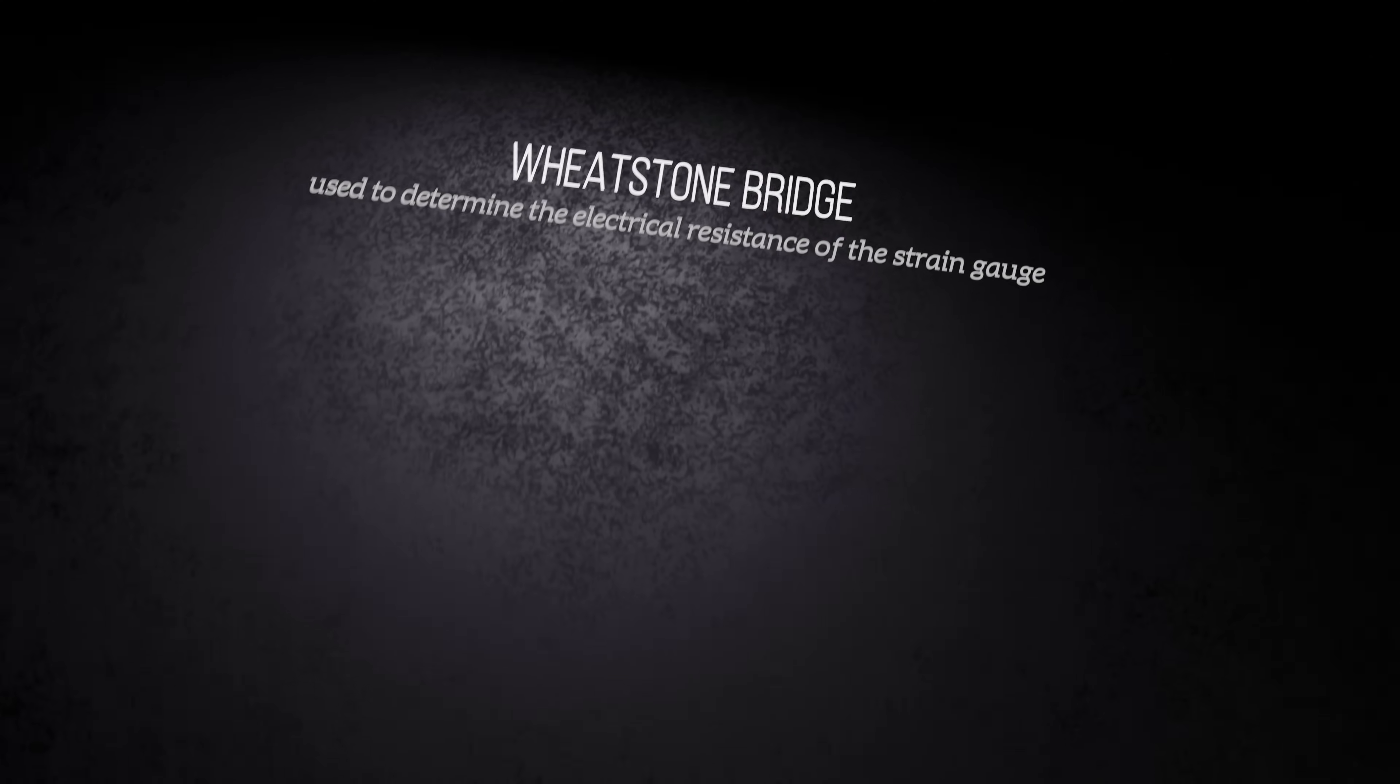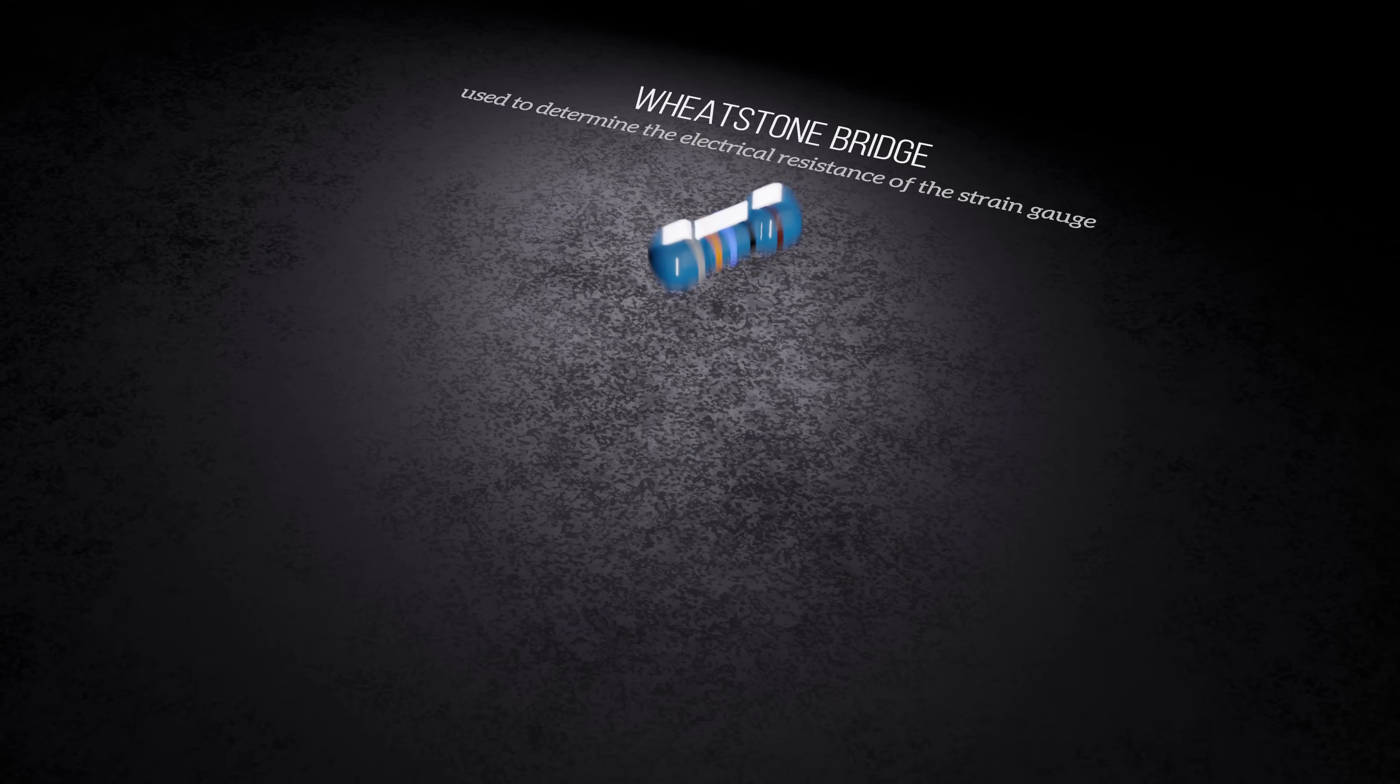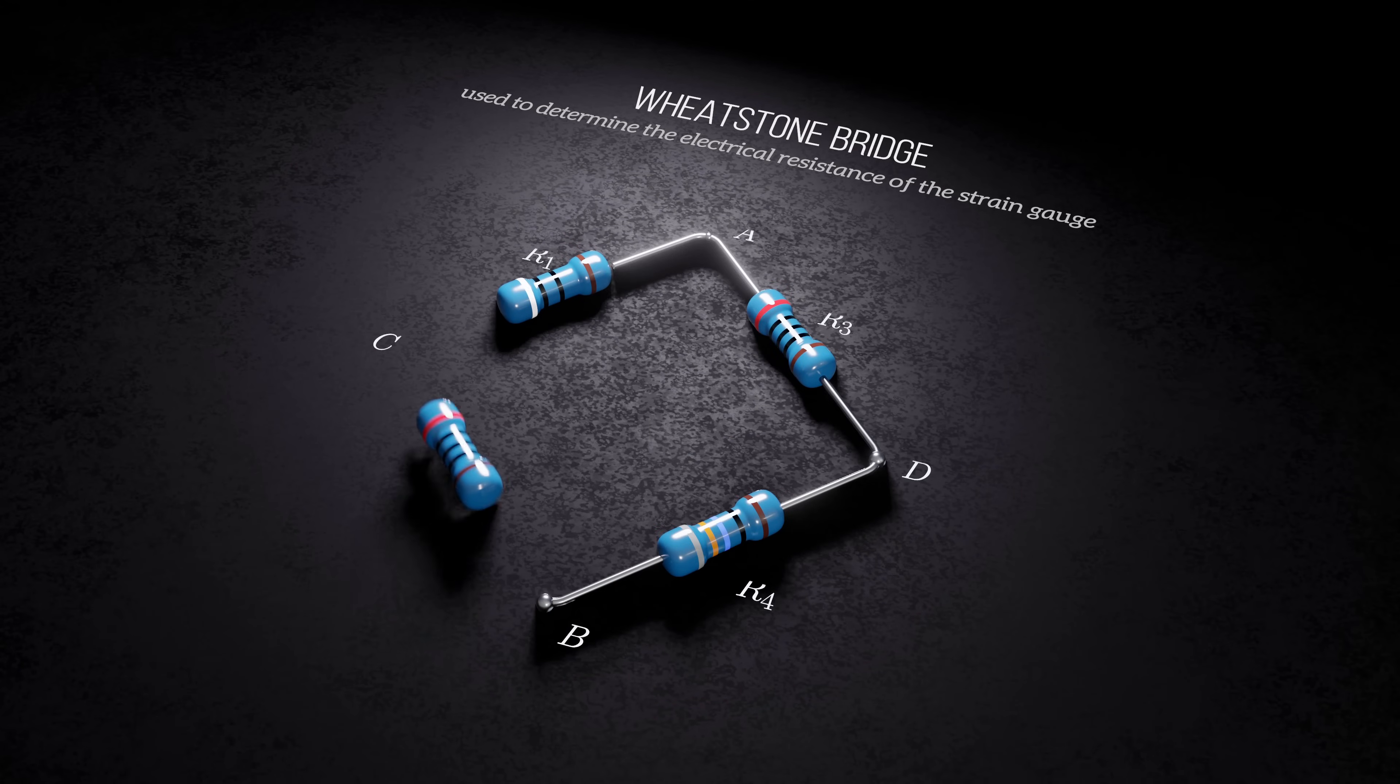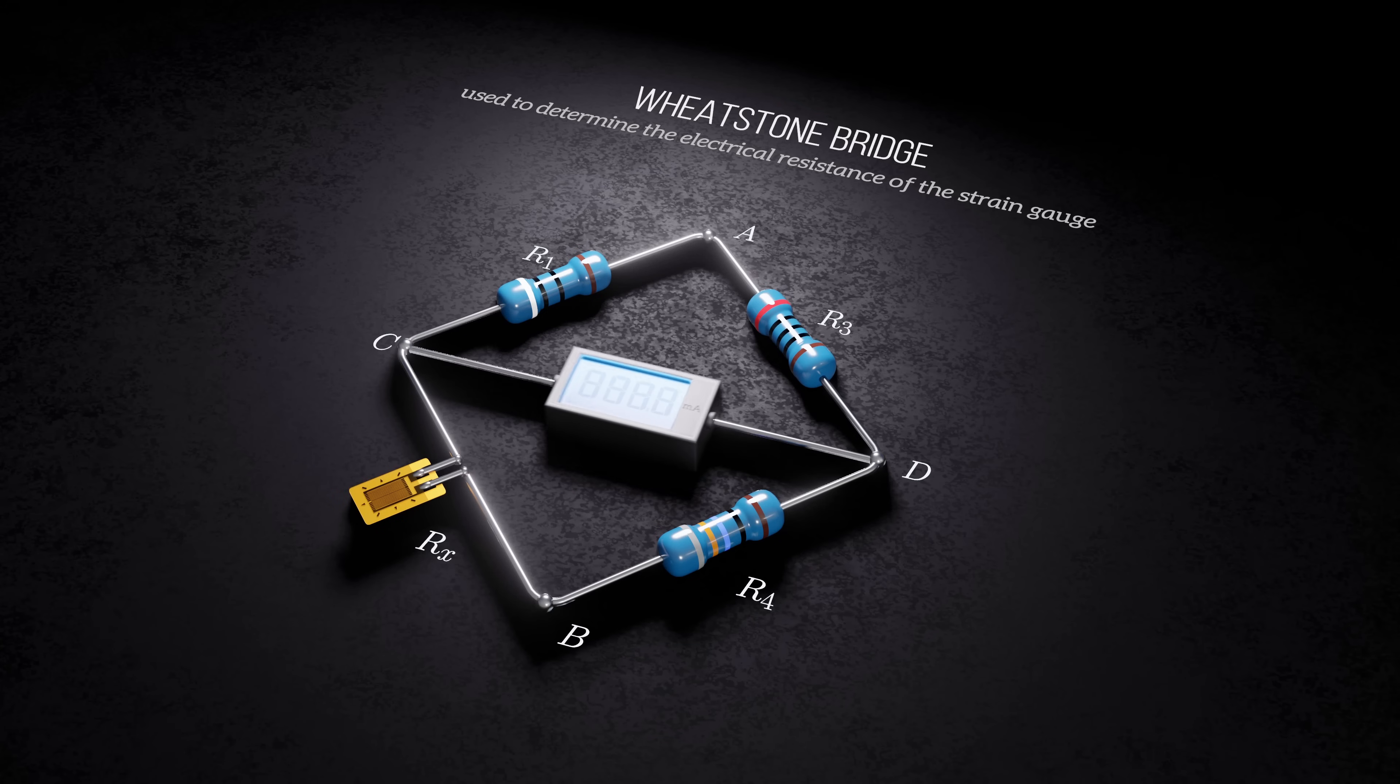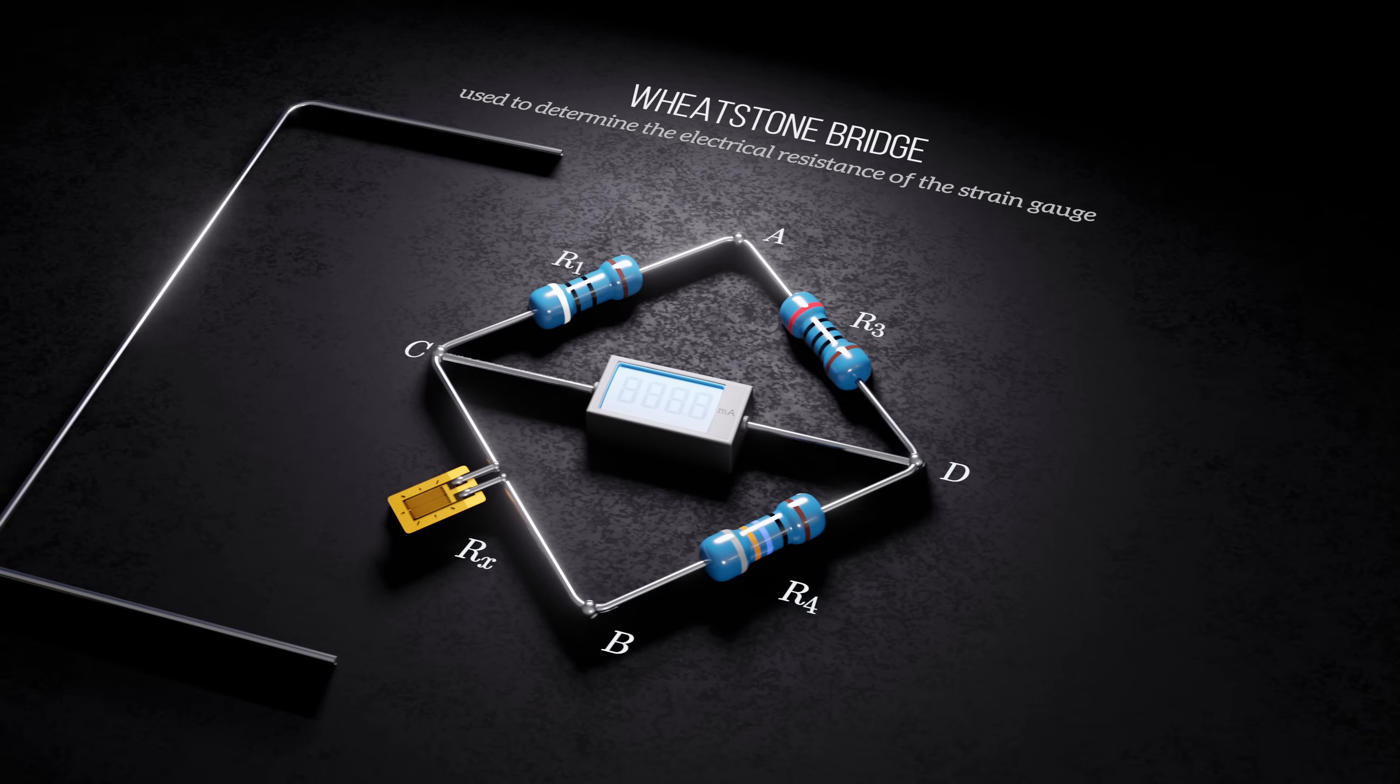The circuit is made up of 4 resistors arranged in a diamond shape. One of these resistors is the strain gauge, and the remaining 3 are resistors of known resistance. Points C and D are connected, and a galvanometer is used to precisely measure the current flowing through this segment. The circuit is connected to a voltage supply, V.